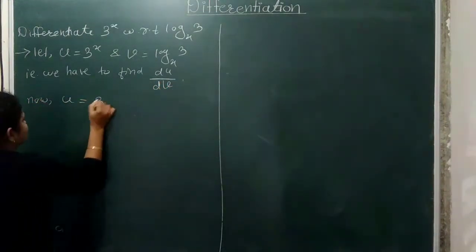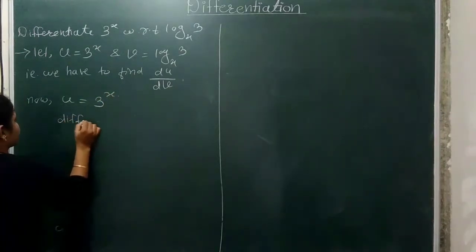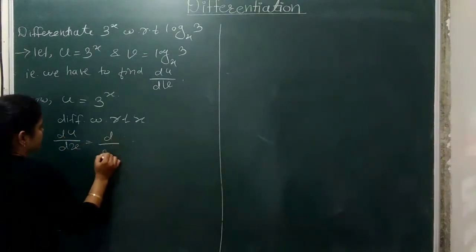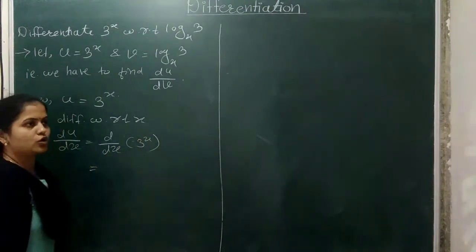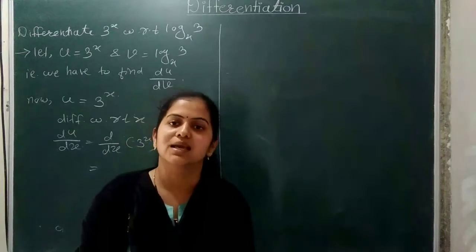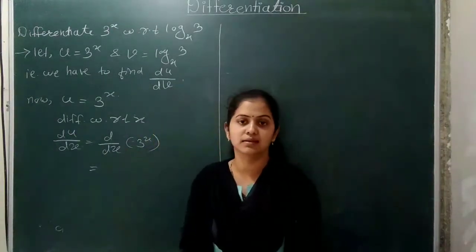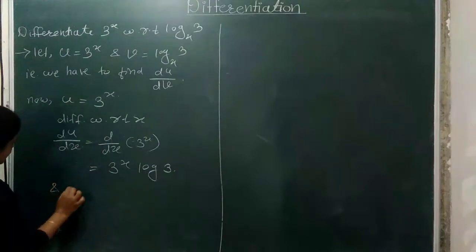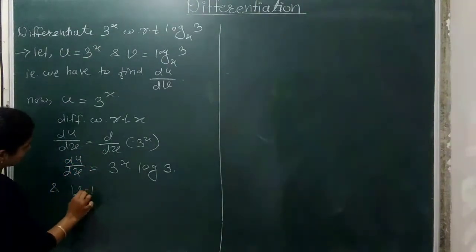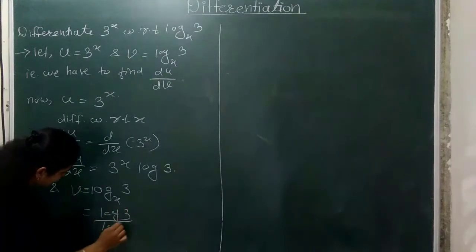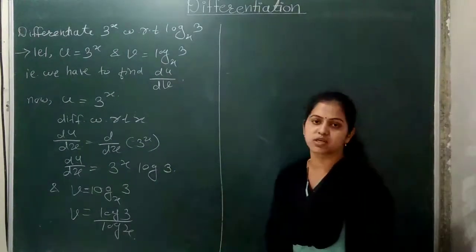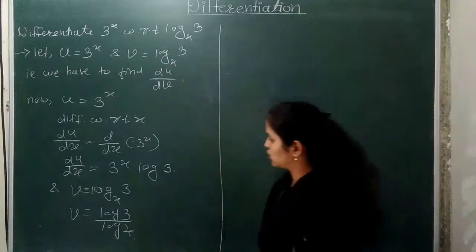For u equals 3 raised to x, using the formula for a raised to x: du/dx equals 3 raised to x times log 3. For v equals log 3 to the base x, using the change of base formula: v equals log 3 upon log x.